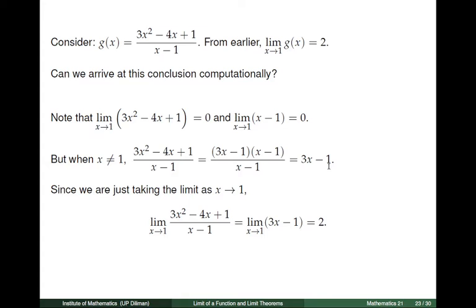And so we get 3x minus 1. Now, since we are taking the limit as x tends to 1, we are not interested at the value x equal to 1. So in evaluating the limit of 3x squared minus 4x plus 1 divided by x minus 1 as x tends to 1, we can instead consider the expression 3x minus 1 and take the limit of this polynomial. Plugging in 1 to 3x minus 1, we get 2, which is the desired limit.